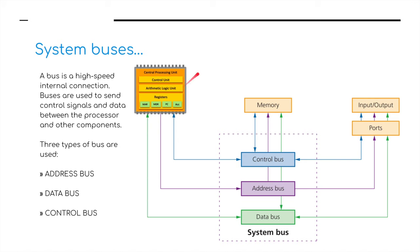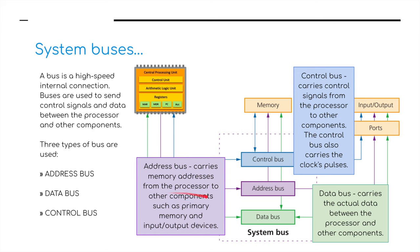How does the CPU talk to memory, and how does it talk to the input and output devices? We use a series of things called buses. The three main types are the control bus, the address bus, and the data bus. The address bus carries memory addresses from the processor to other components such as primary memory and input and output devices. The control bus carries control signals from the processor to other components, and also carries the clock's pulses. The data bus carries the actual data between the processor and other components — carrying information between the memory, the CPU, and the ports to the input and output devices.